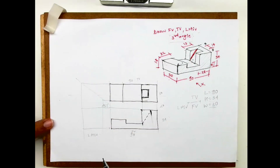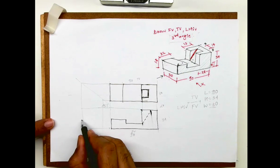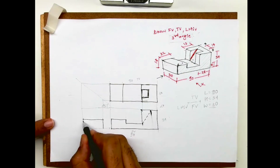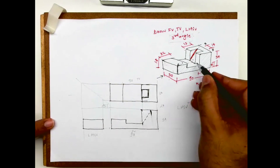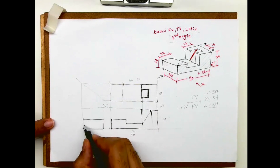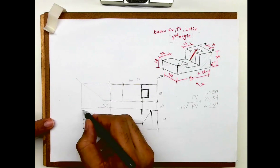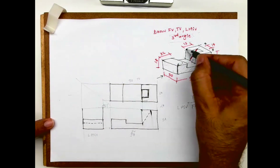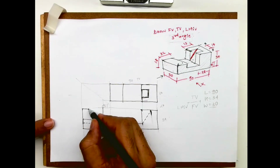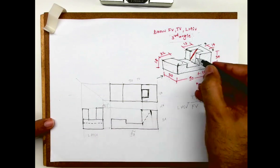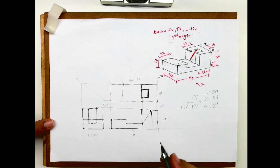When you see from the left side, you see 18 by 30 — so draw that rectangle. This dotted line: when you see from here you can't see this edge, so that is dotted. This part is 8 and 8 — take 8 from here, going down, so this is dotted, and this part is solid. This is the left-hand side view.